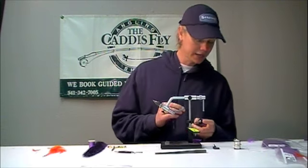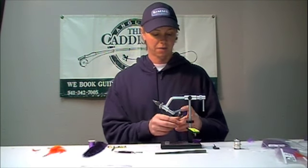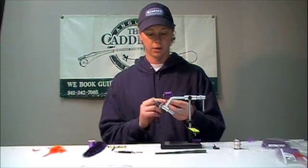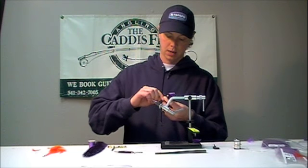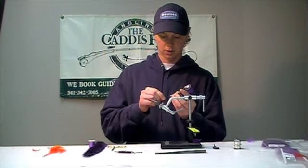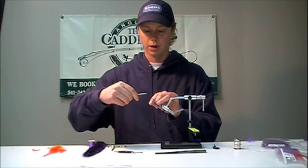Today we're tying it in a size 2, this is a Tiemco 79-99. I've got some purple 6-aught unithread, using the self-threading bobbin. We're all ripped and ready to go.